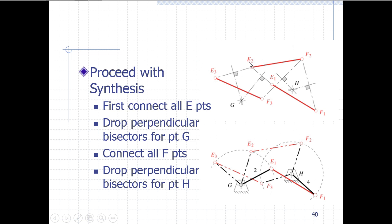Drawing perpendicular bisectors from E1 to E2 and E2 to E3, their intersection gives a ground position labeled G. Similarly, perpendicular bisectors from F1 to F2 and F2 to F3 give a rotopole labeled H. We then connect the ground positions to the first coupler positions: link G to E1, and link H to F1. This gives us our four-bar linkage with ground points at G and H, with the coupler link E1F1 moving through E2F2 and then E3F3.